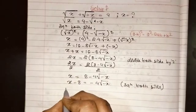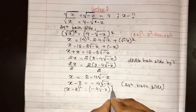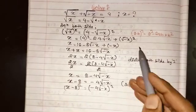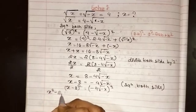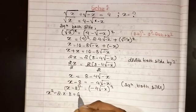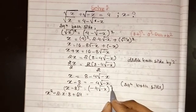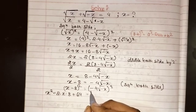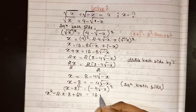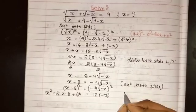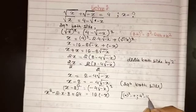Squaring both sides: (x - 8)² = (-4√(-x))². Again using the identity (a - b)² = a² - 2ab + b², the left side gives x² - 16x + 64. On the right side, minus times minus is plus, so (-4)² = 16, and (√(-x))² = -x, giving us 16(-x) = -16x.